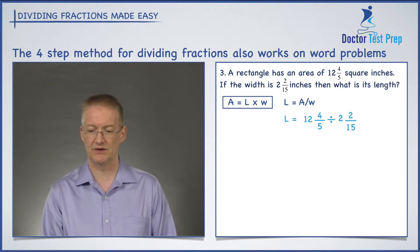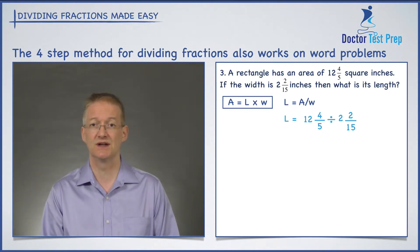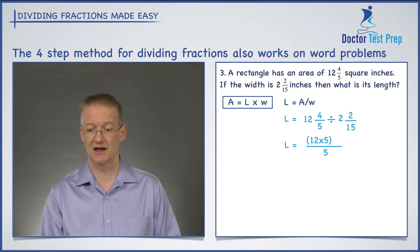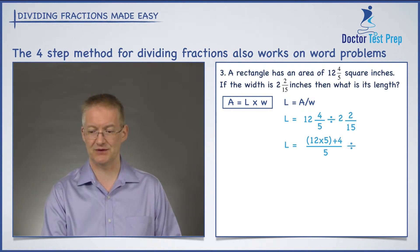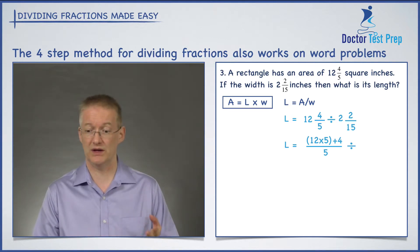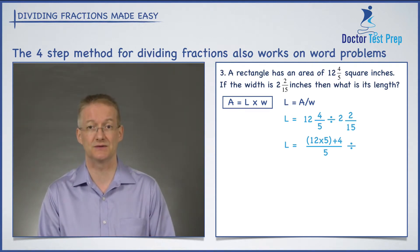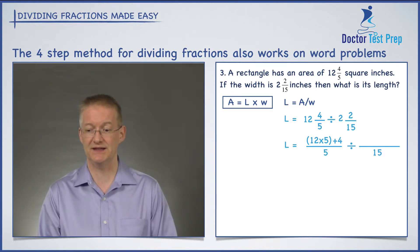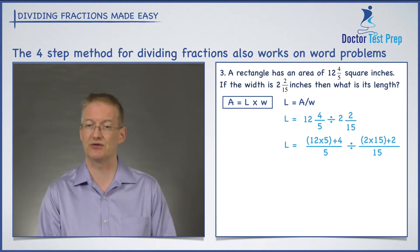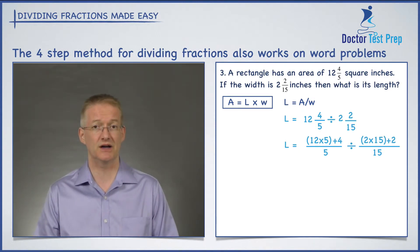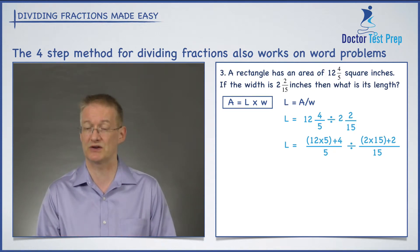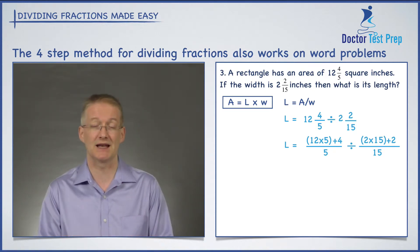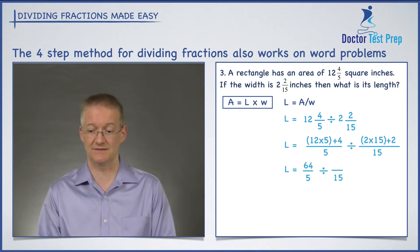So this question is asking me to do 12 and 4 fifths divided by 2 and 2 fifteenths. Step number one: we have mixed numbers so we need to convert them into improper fractions. For 12 and 4 fifths: multiply 5 by 12 to get 60, add 4, giving me 64 over 5. For 2 and 2 fifteenths: 2 times 15 is 30 plus 2, giving me 32 over 15. So I've converted these mixed numbers into improper fractions, and my length equals 64 over 5 divided by 32 over 15.